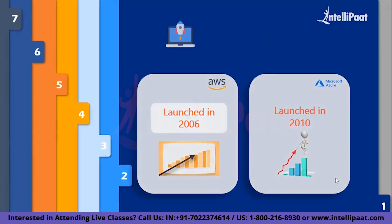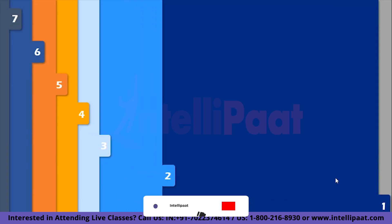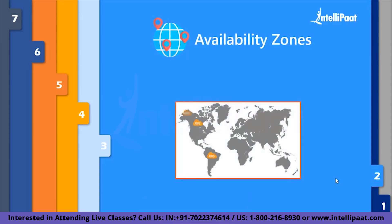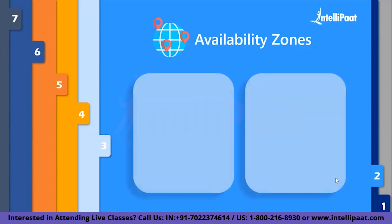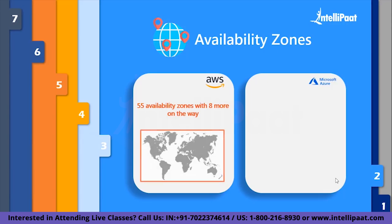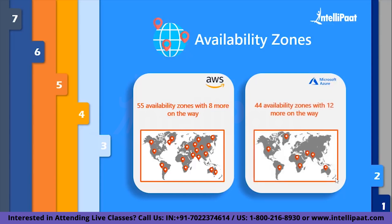Now let's start from the basics and discuss the first factor, that is the availability zones. AWS was the first of its kind, which means AWS is hosting in multiple locations worldwide, and of course it's true for Azure as well. But the difference occurs in the numbers of regions and availability zones. AWS has 55 availability zones worldwide with 8 more on its way, whereas Azure has 44 availability zones with 12 more on the way.